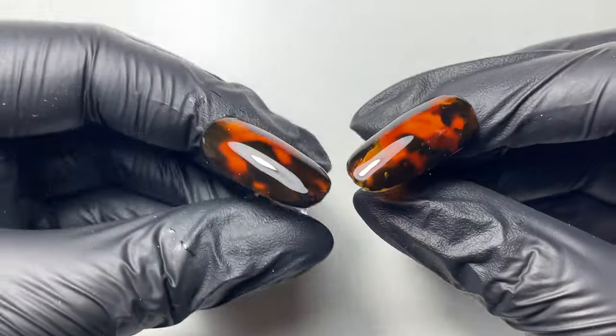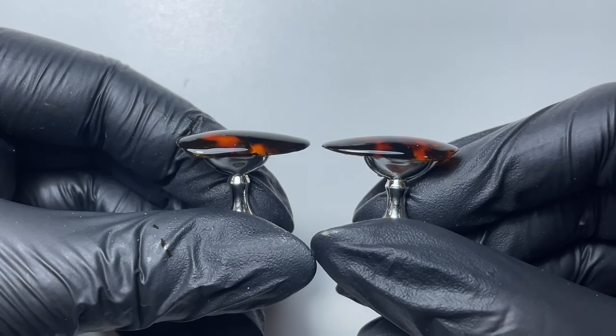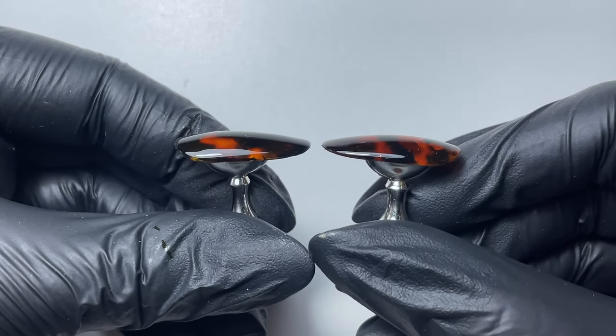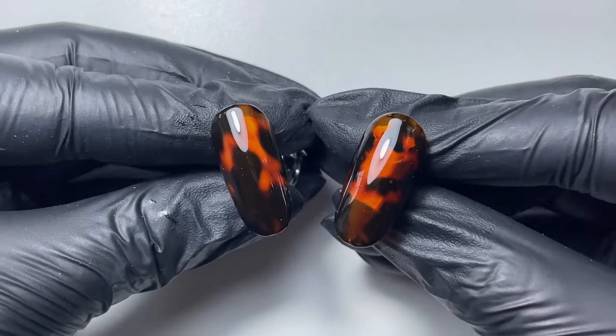As you can see as well, there's no lumps and bumps using the foil. You get a really nice smooth finish. I really hope you enjoyed watching this tutorial. Let me know what you think in the comments. Thanks guys, bye!